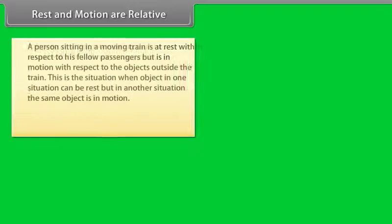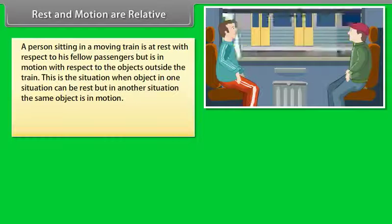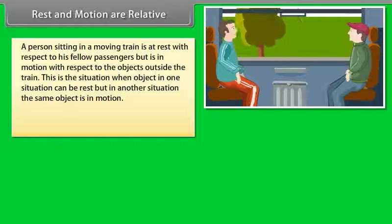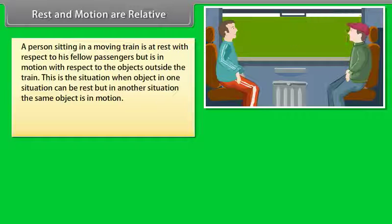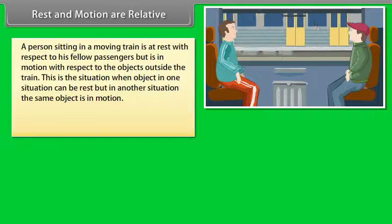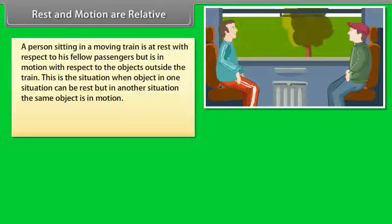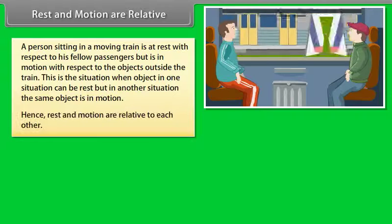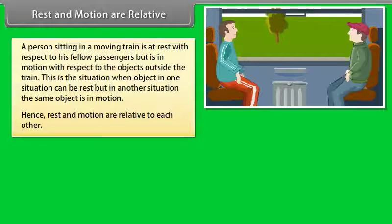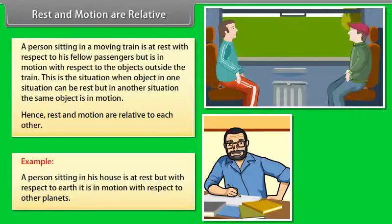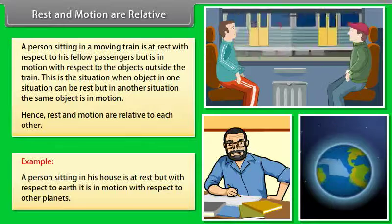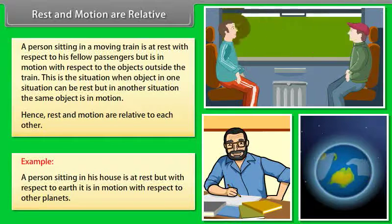Rest and motion are relative. A person sitting in a moving train is at rest with respect to fellow passengers but is in motion with respect to objects outside the train. The same object can be at rest in one situation but in motion in another. For example, a person sitting in a house is at rest, but with respect to the Earth it is in motion, and with respect to other planets as well.